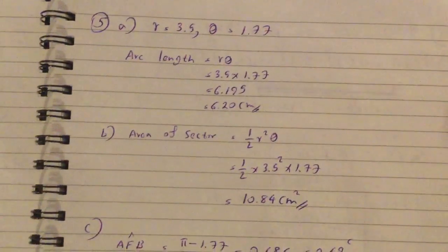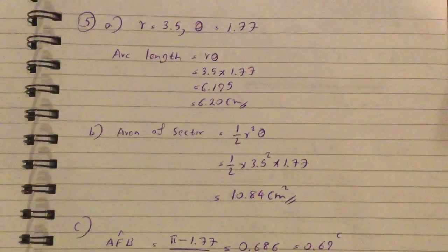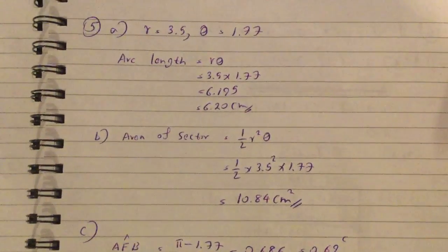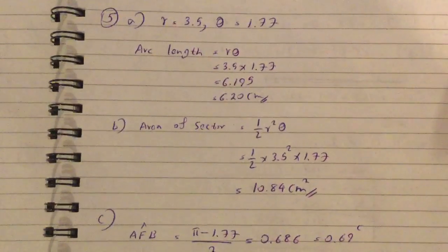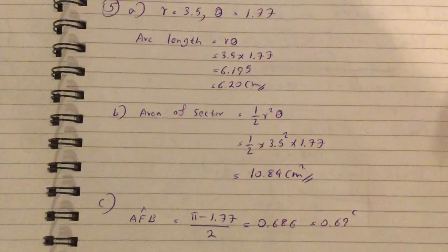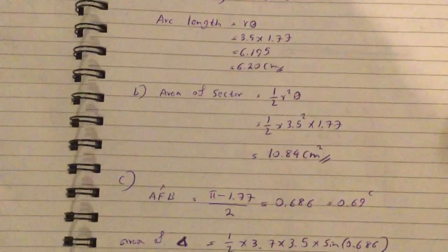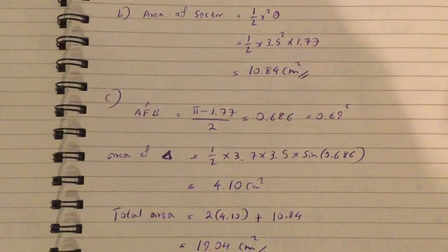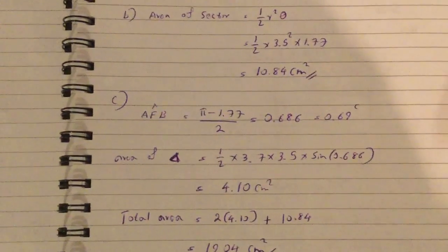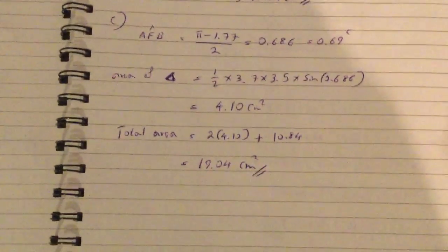Question 5: the radius is 3.5 and theta is 1.77. The arc length is r theta, which is 3.5 times 1.77, giving 6.20 to 2 decimal places. Area of sector is half r squared theta: half times 3.5 squared times 1.77, which is 10.84 cm squared. The angle AFB is pi minus 1.77 over 2, which is 0.686. The area of the triangle is half times 3.7 times 3.5 times 0.686, which is 4.1.